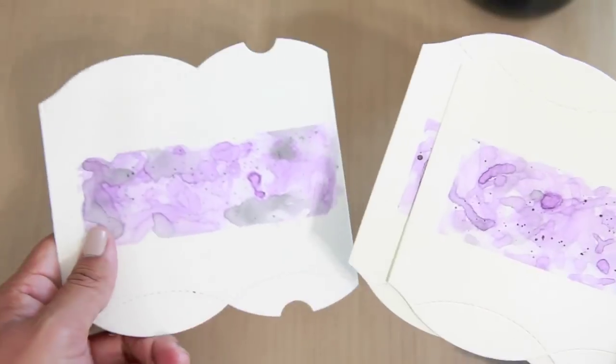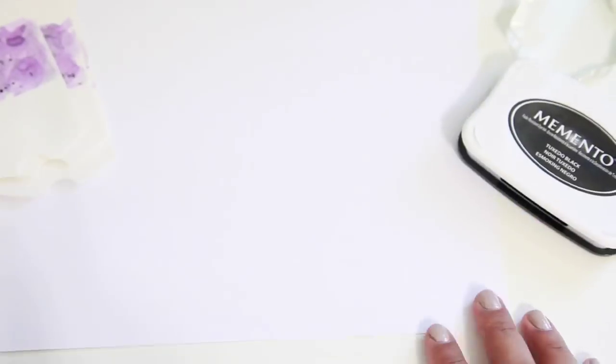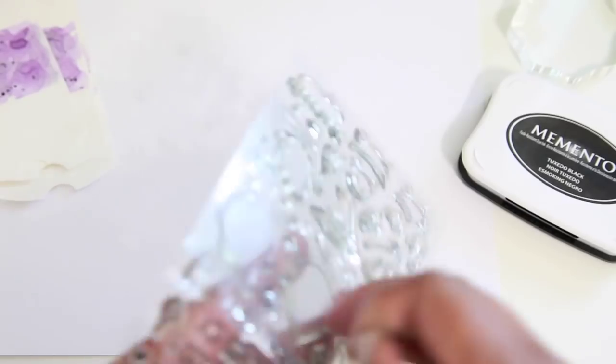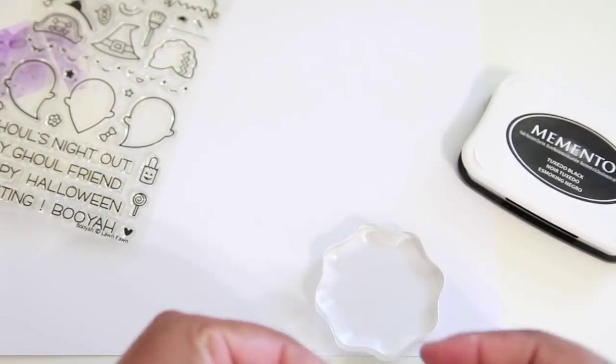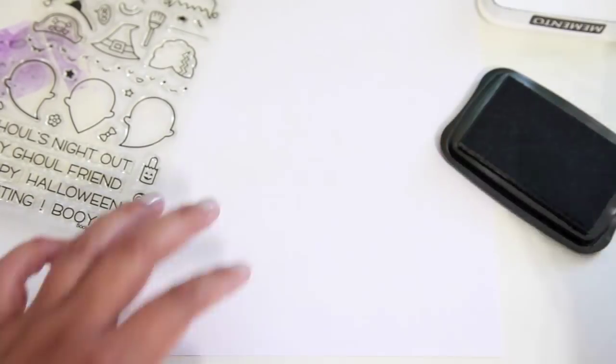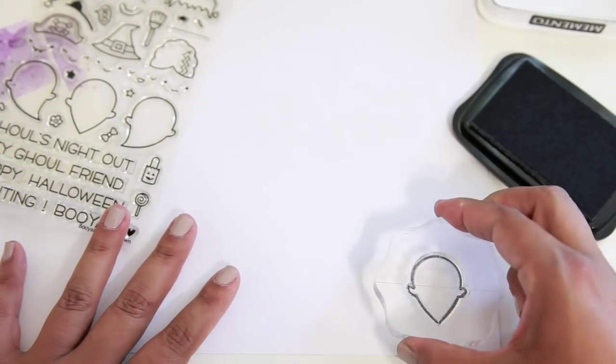Now once the watercoloring was done, I went ahead and off camera did the last two with the same exact technique. So now I'm going to go ahead and take the really cute stamp set and I'm going to start stamping out the little ghost images here.